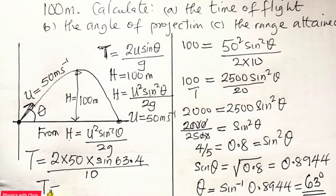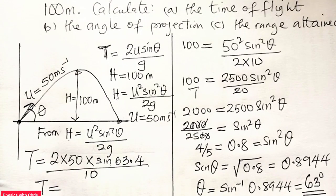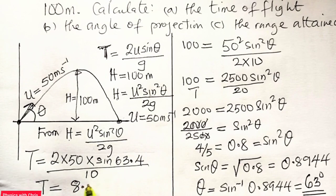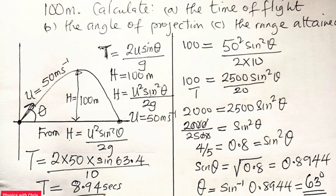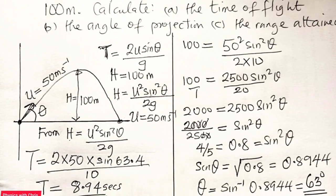So when I compute this, what will be the time of flight? So I have here 2 times 50 times sine 63.4. So my time of flight divided by 10 gives me 8.94 seconds, to 2 decimal places. So that's the time of flight for this projection, for this projectile.